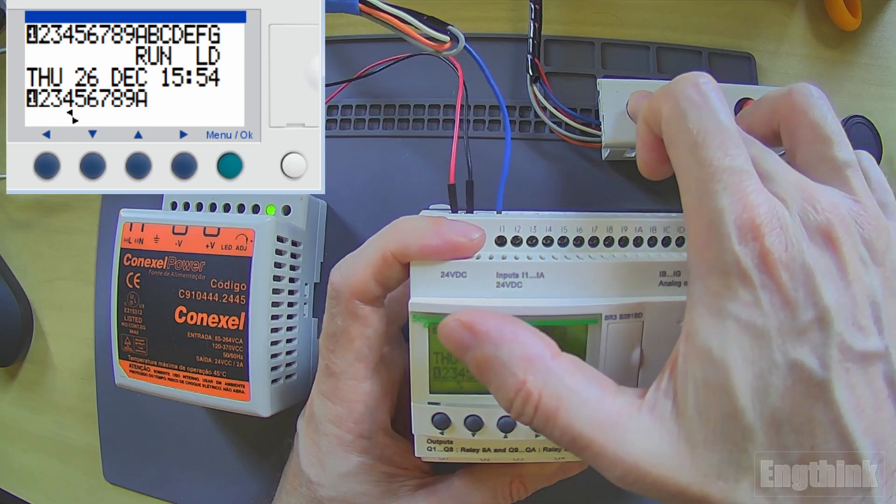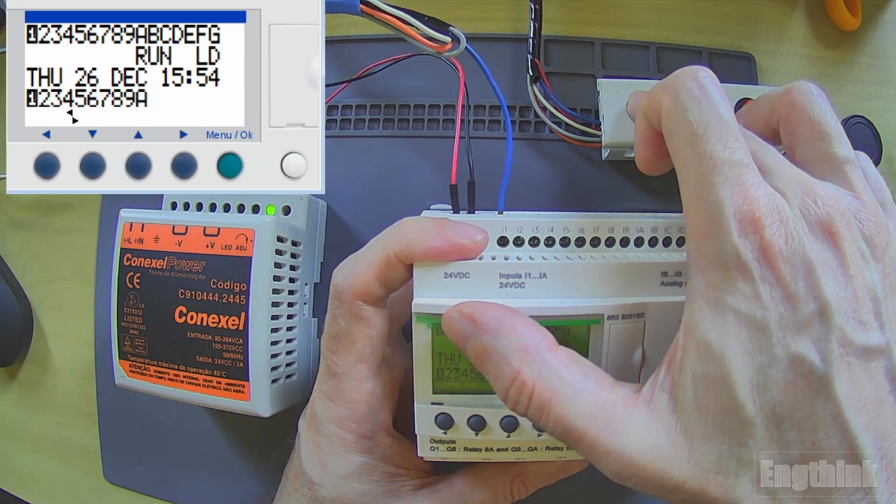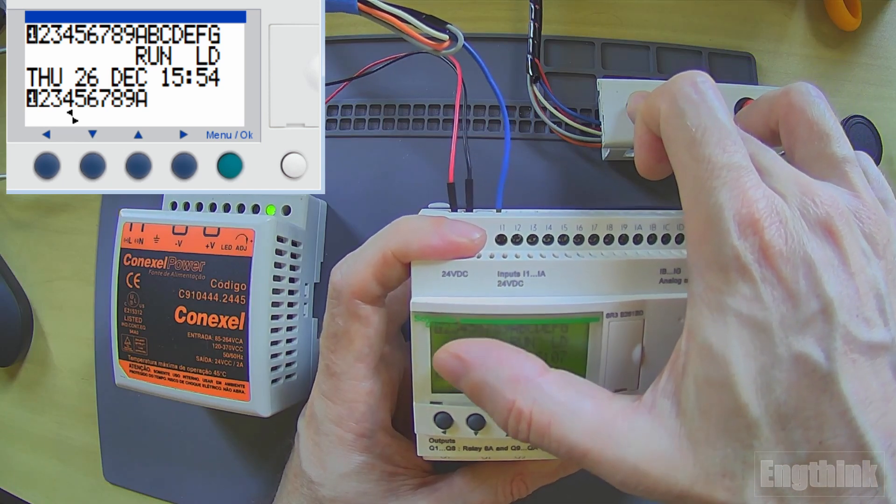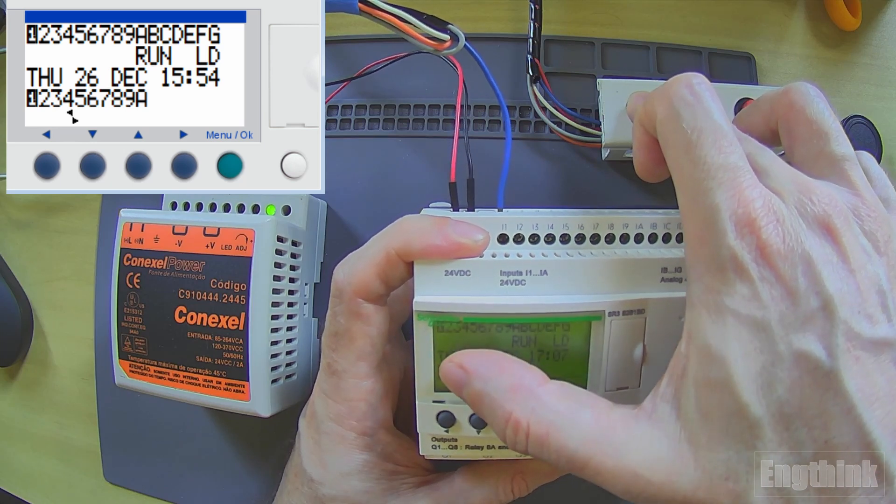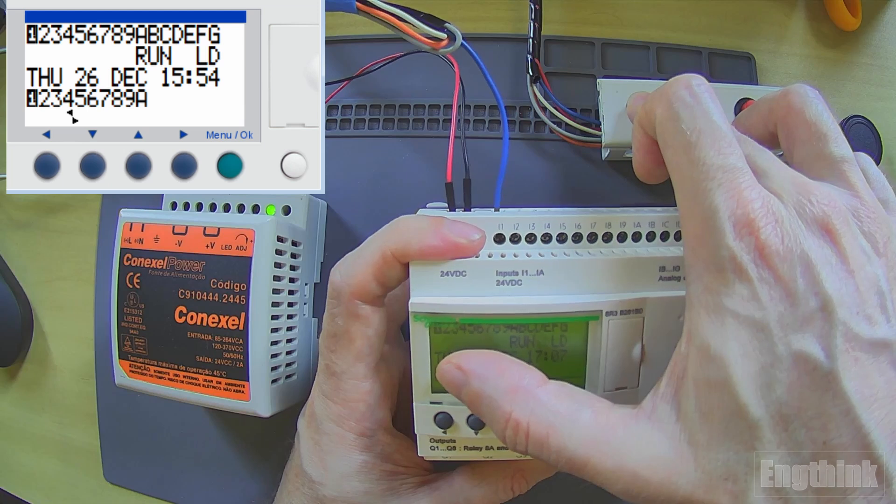We have this reverse video where white goes to black in the numbers, for the digital input I1 that I press, as well as for Q1, the digital output.